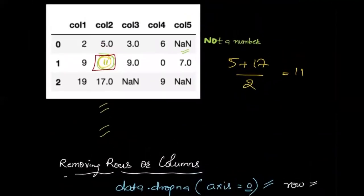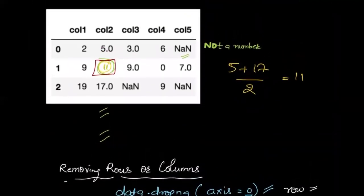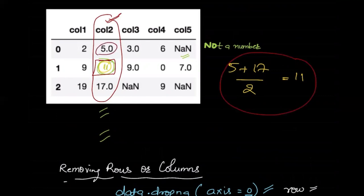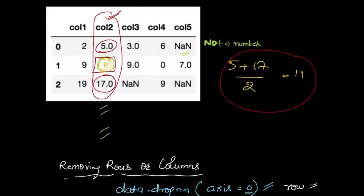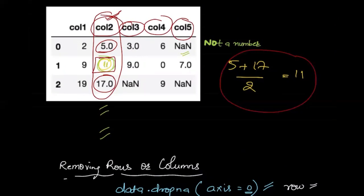But what is the drawback of this approach? When I'm imputing a value in column two, I'm only looking at column two — I'm not looking at column one, column three, column four, or column five. That means I'm not maintaining the correlation between these columns, even though there is a correlation between these features.